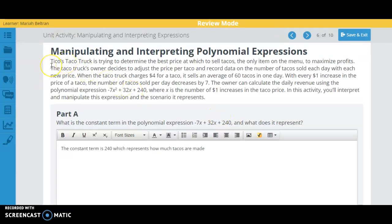Hey Mariah, I wanted to give you some feedback on this activity in a video, so hopefully it'll make a little more sense. So when we're talking about Tio's taco truck, it says the taco truck charges $4 for a taco. So that's their average, or what they start at.